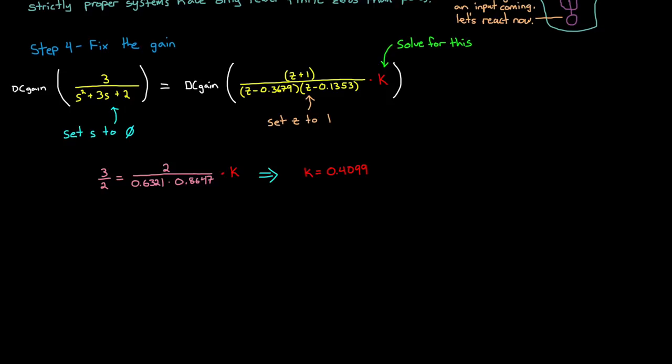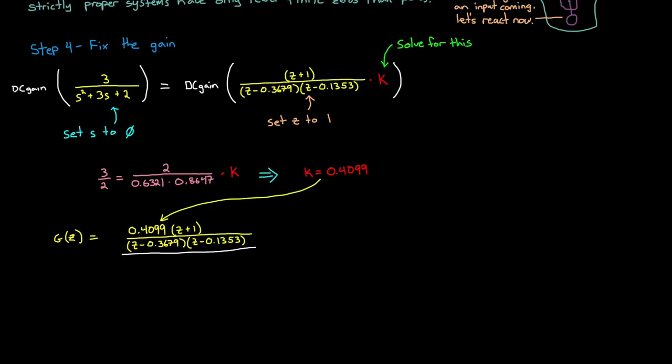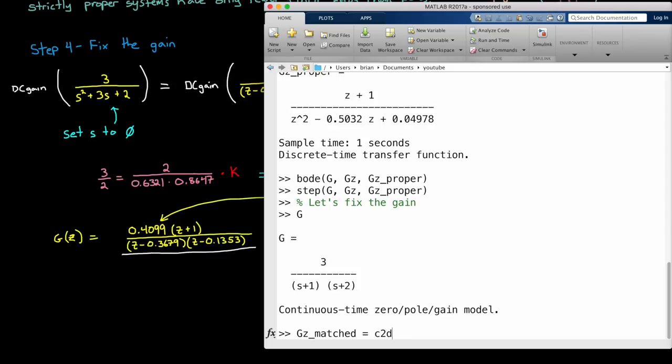I'll just copy our previous transfer function and multiply it by this value. And this is the final form of g of z. This is the result of converting the continuous transfer function using the matched pole-zero method. We can double check this by using the continuous to discrete function, c2d, in MATLAB. Our continuous system we want to convert is g. The sample time of the discrete system is 1 second, and we want to use the matched pole-zero method for the conversion. And you can see that we got the exact same result in MATLAB as we did by hand.